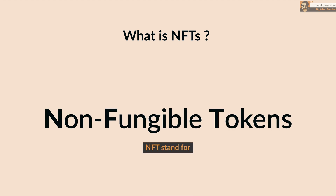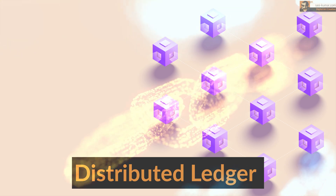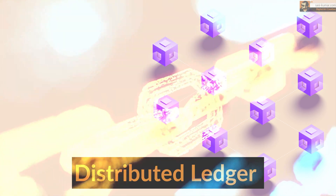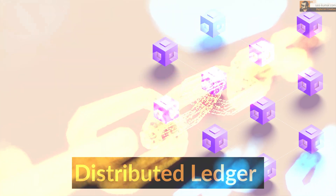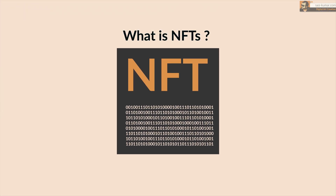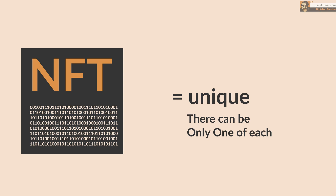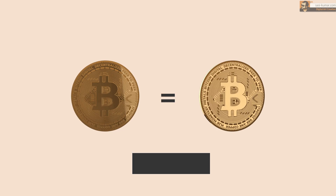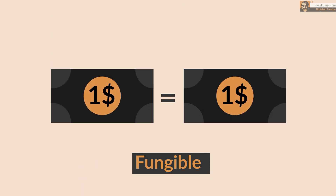Non-fungible means it is going to be unique inside the distributed ledger — and the distributed ledger is what blockchain is all about. To completely understand NFTs you need to understand blockchain technology first. In simple terms, NFTs are basically digital assets, but these assets cannot be interchangeable or replaceable. For example, Bitcoin is also a digital asset, but those assets can be interchangeable or replaceable.